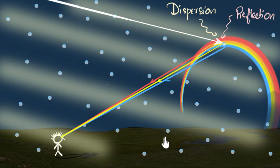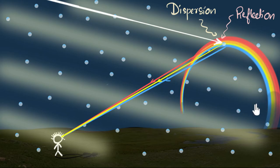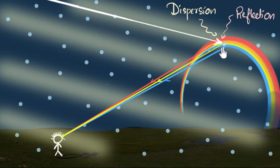But this raises more interesting questions. For example, if each raindrop is giving me colors, why do I just see one single rainbow? Shouldn't each raindrop be giving me a rainbow? It should be a complete mess of colors. Why do I see this nice pattern? To answer this, we need to dig a little bit deeper and see what's exactly happening inside those raindrops.